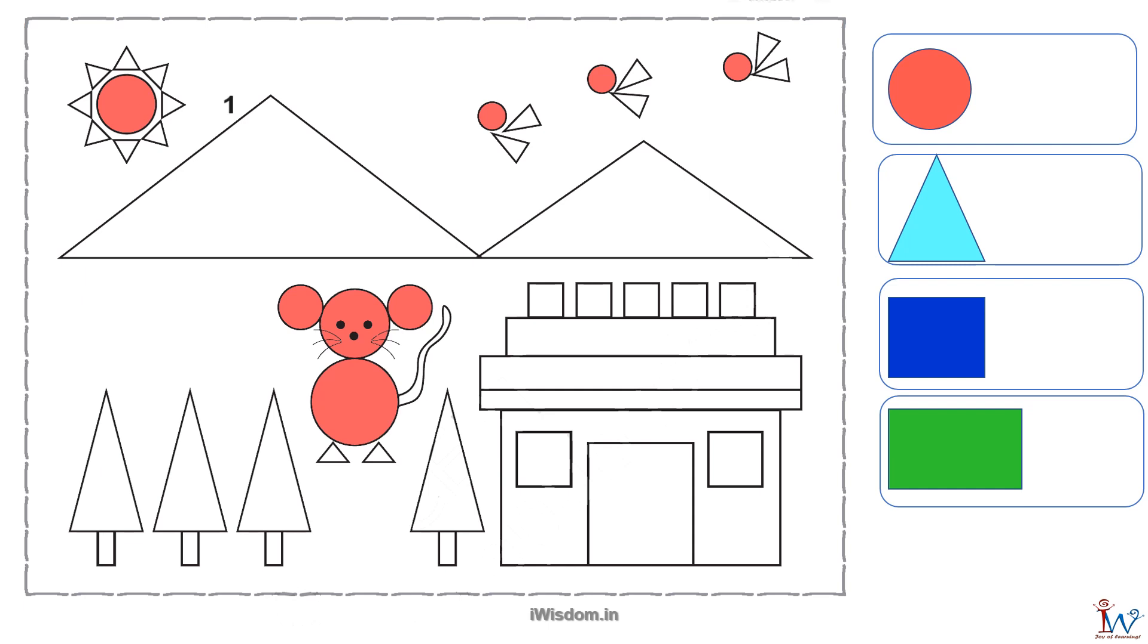The sun is made of one circle. Head of the birds, two, three and four. The cat is made of four more circles, five, six, seven, eight. So we have a total of eight circles.